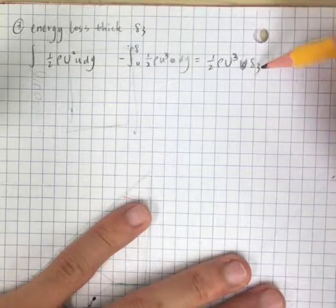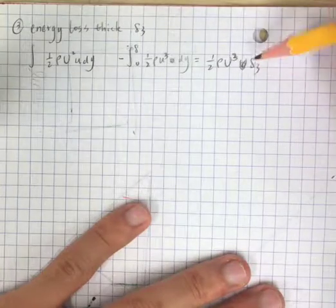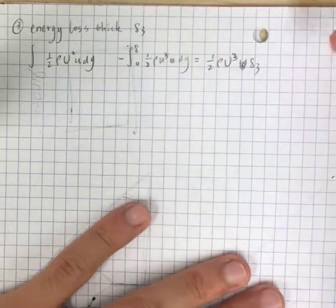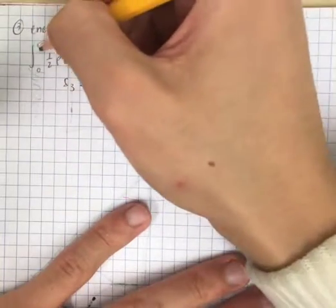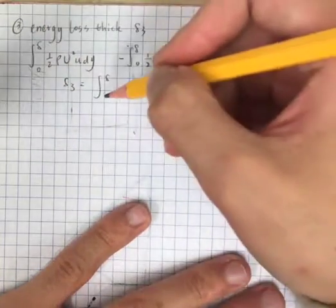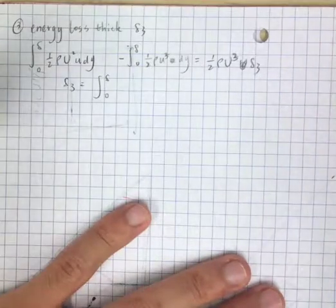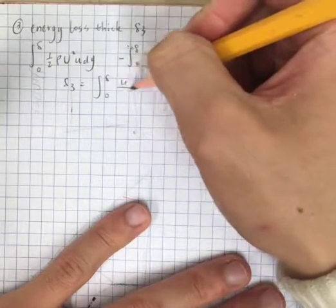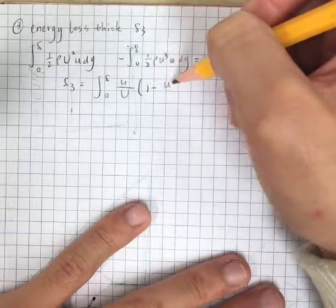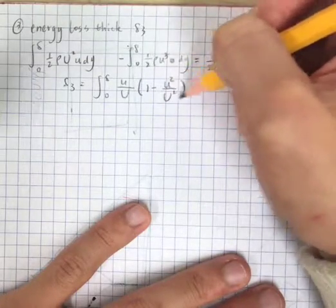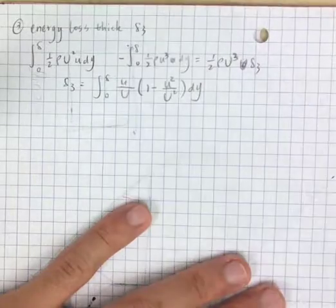So from there, we can get an expression of the energy thickness delta 3. Delta 3 should give us the integration from 0 to delta, or you can say from 0 to infinity, of u over capital U minus 1 minus u squared over capital U squared dy. By the way, it's in the light of state.